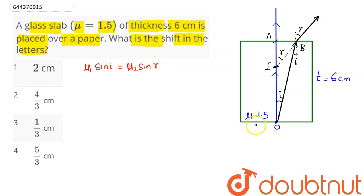Now μ₁ here is 1.5 sin i equals μ₂, which is 1 sin r. Now for small angles we can say sin i is approximately tan i and sin r is approximately tan r.